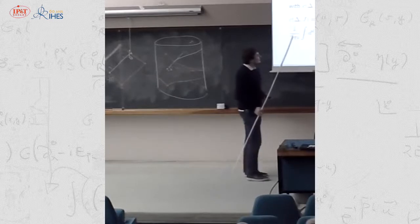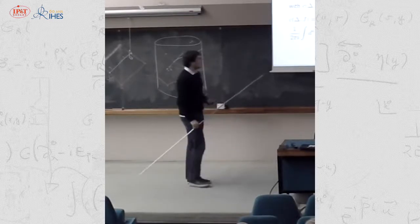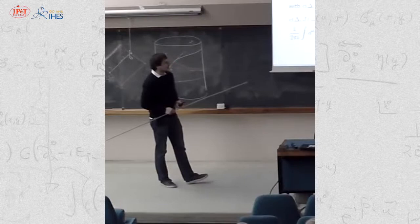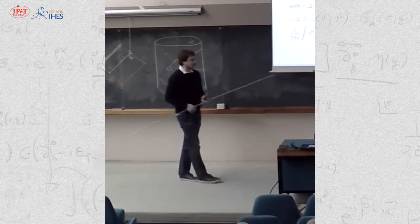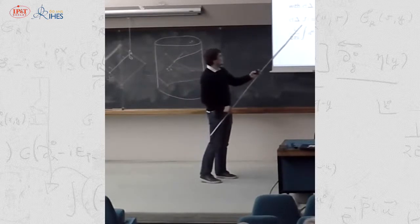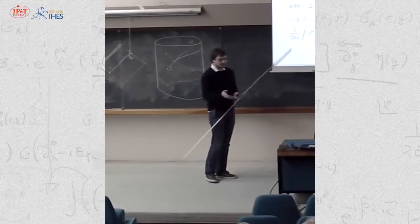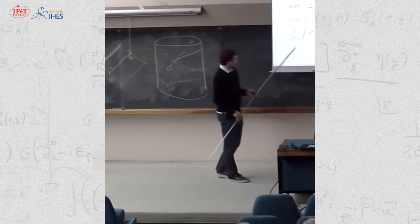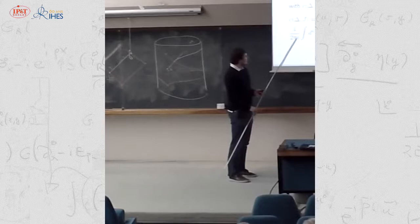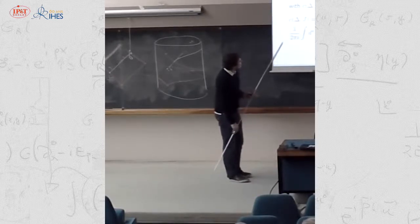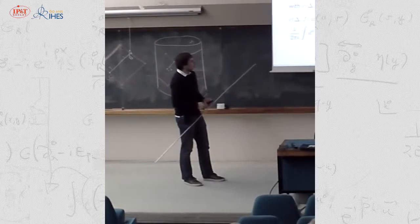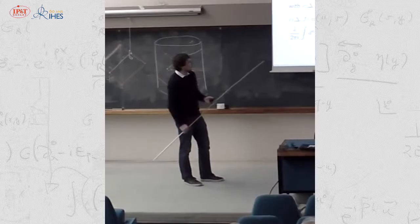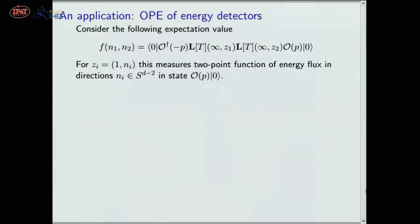The most famous application of analyticity of C(Δ,J) in spin is of course Regge theory, where you perform a Sommerfeld-Watson resummation: you turn a sum over J into an integral over J, pick up poles in the complex J plane, and get the Regge story. This can then be interpreted using our proposal as a contribution of certain non-integer spin operators to the four-point function.